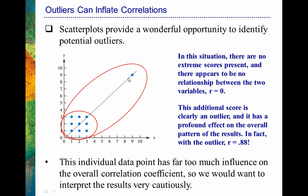There's a problem, of course, because that one individual data point has too much influence on the overall correlation. When we have an outlier with a lot of influence, we need to interpret our correlation very cautiously, because so much seems to be riding on this one value.